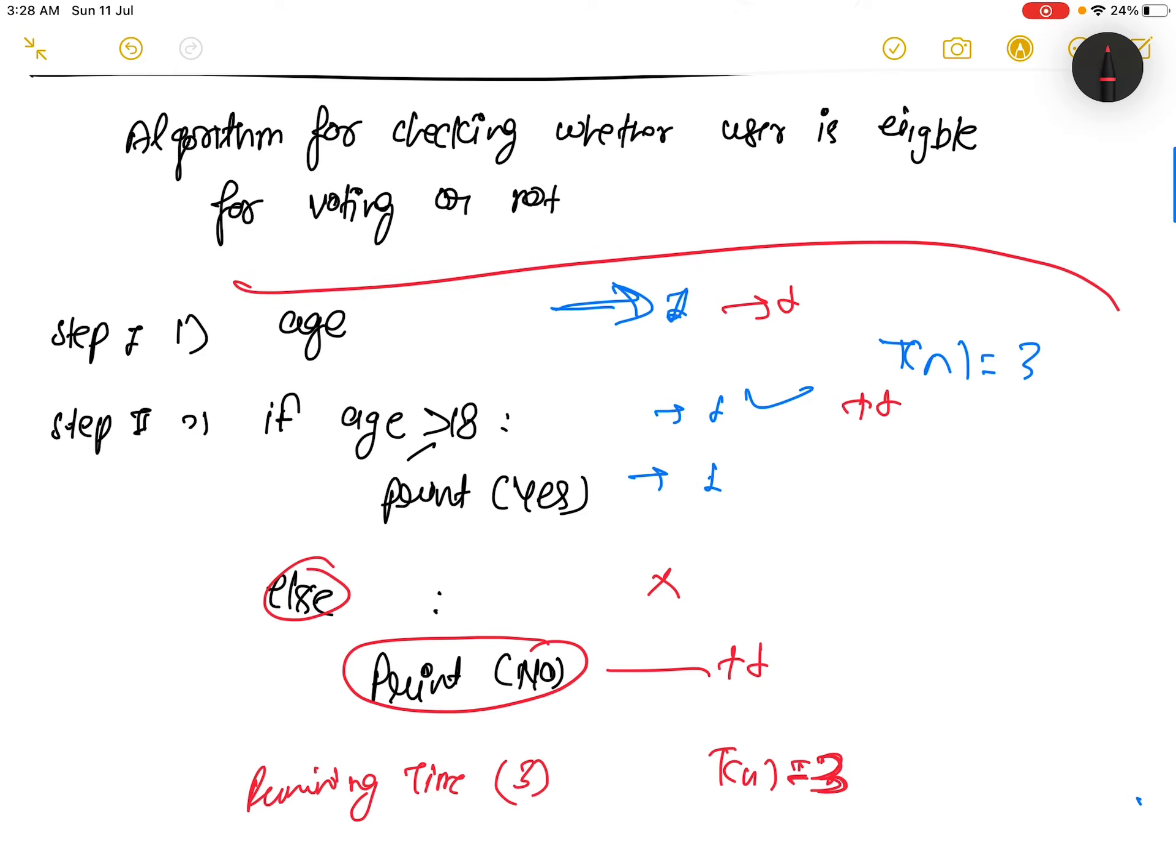If this process will go on for any user, suppose this program will execute like this and the total will be what? n plus three.